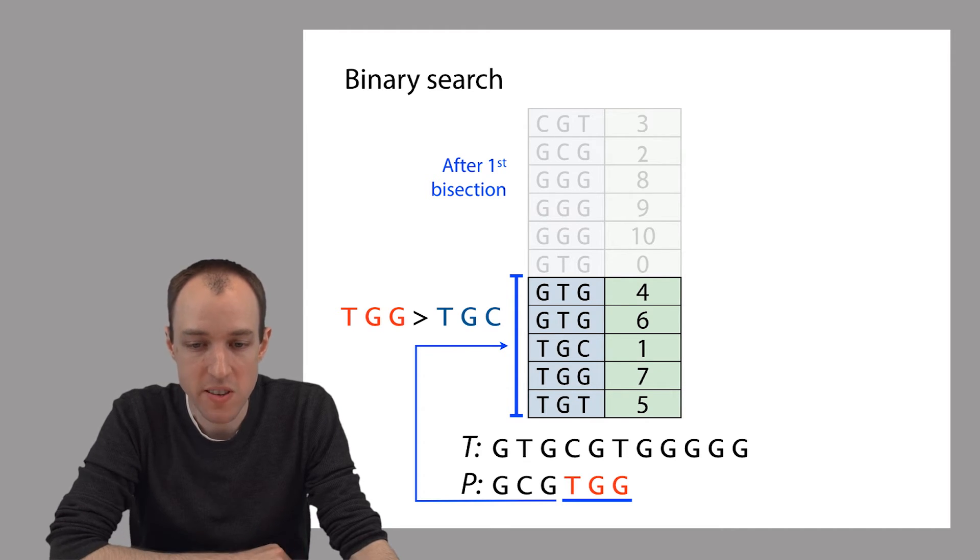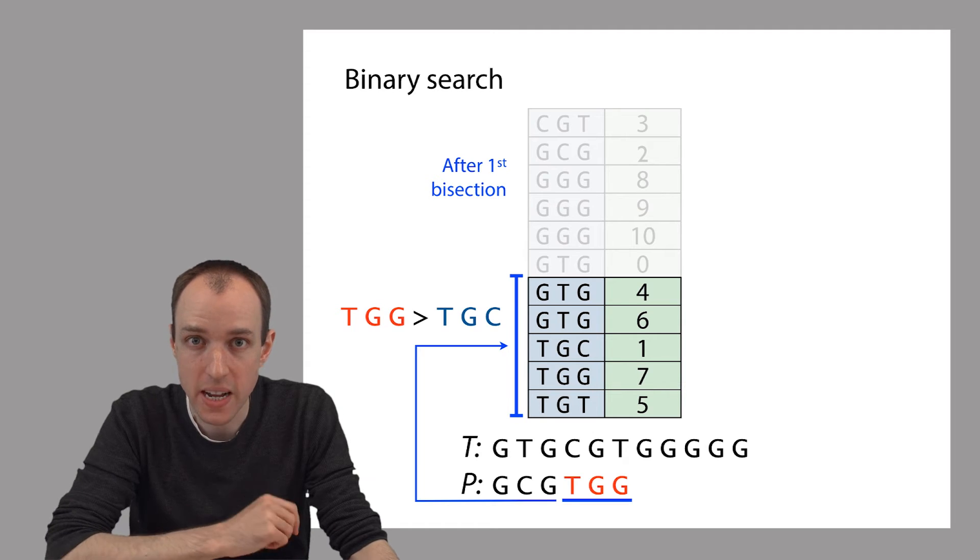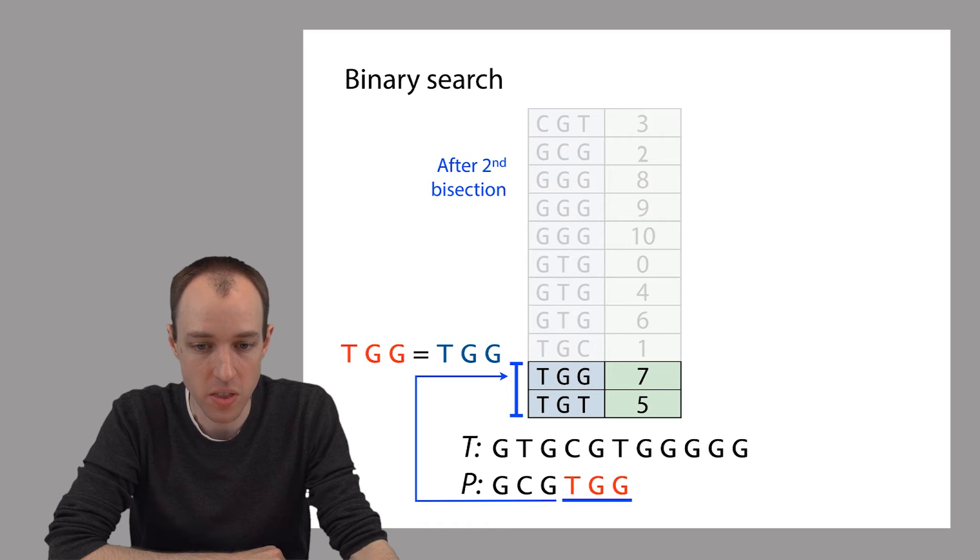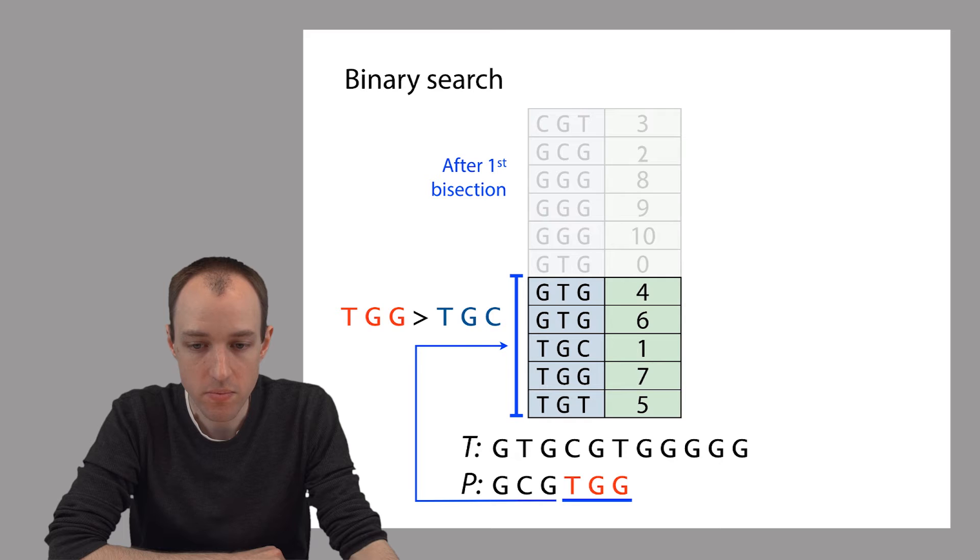So what do we do next? We do the same thing again, but on the remaining entries of the index. We compare TGG with the middle K-mer here, which is TGC. And TGG comes after, so we can bisect again. We can throw out the first half.